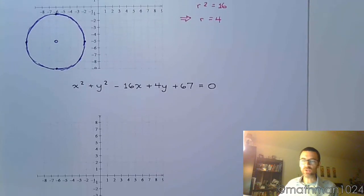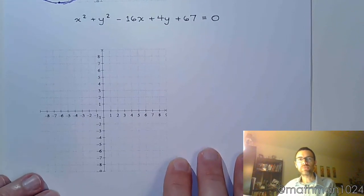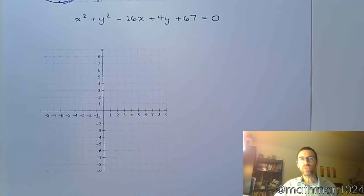So down here, I have x squared plus y squared minus 16x plus 4y plus 67 equals 0. So just like we did on the last problem, let's rearrange.